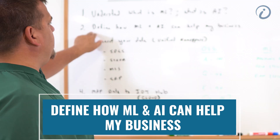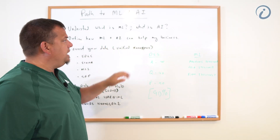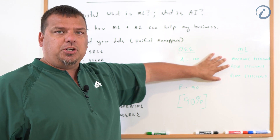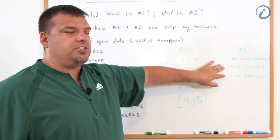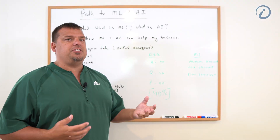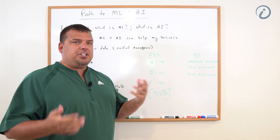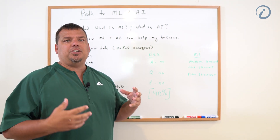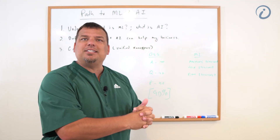The second step is we have to define how machine learning and AI can help my business. In this case, our definition is: it can help my business by accurately telling me how efficient my machine is running right now, how efficient my area — a group of machines — is running right now, and how efficient my plant is running right now. Efficiency of a business is actually a lot more than just how efficient the equipment is running; it's how efficient the business is running overall.